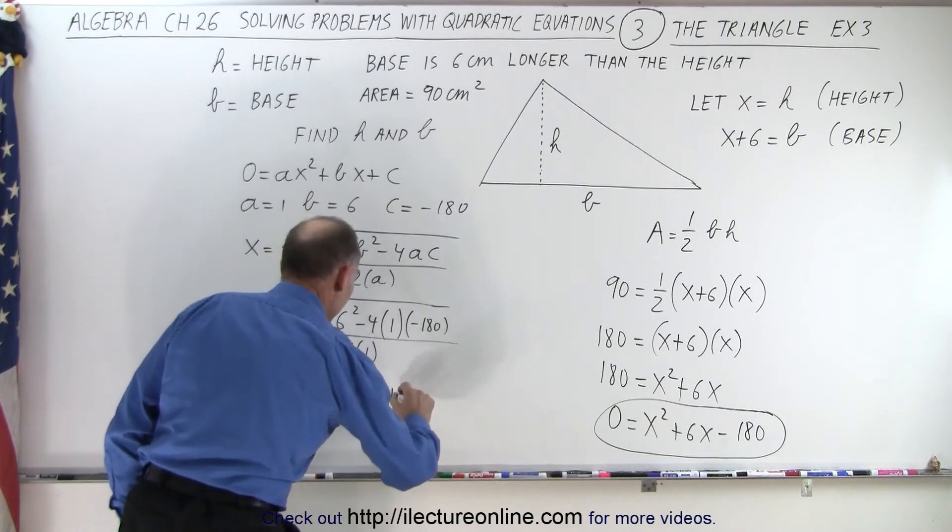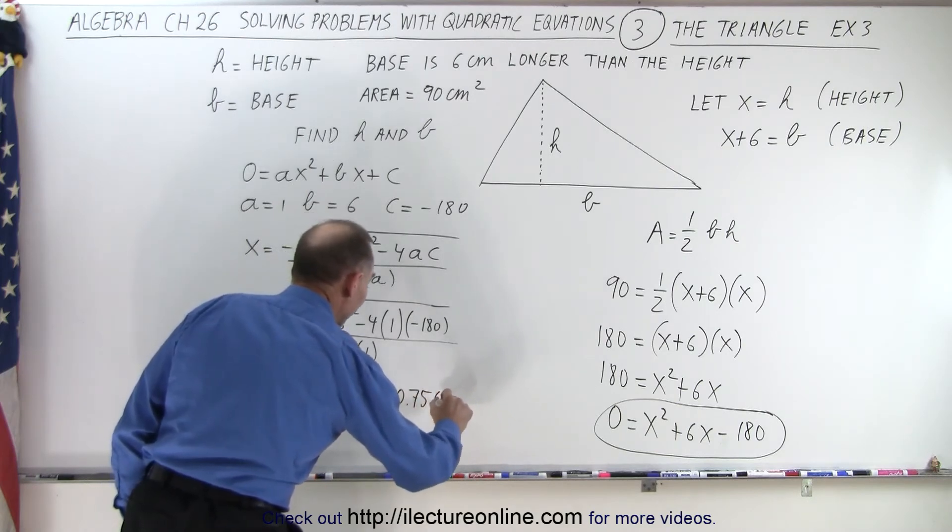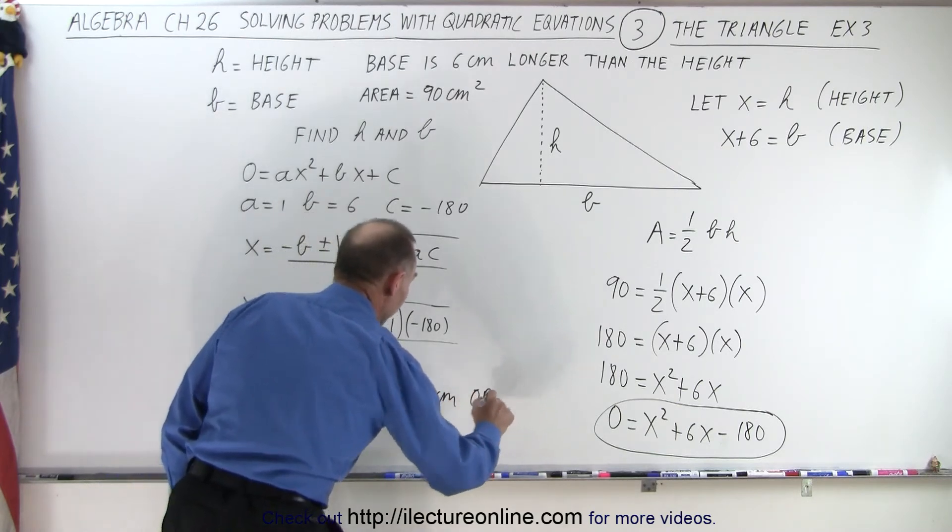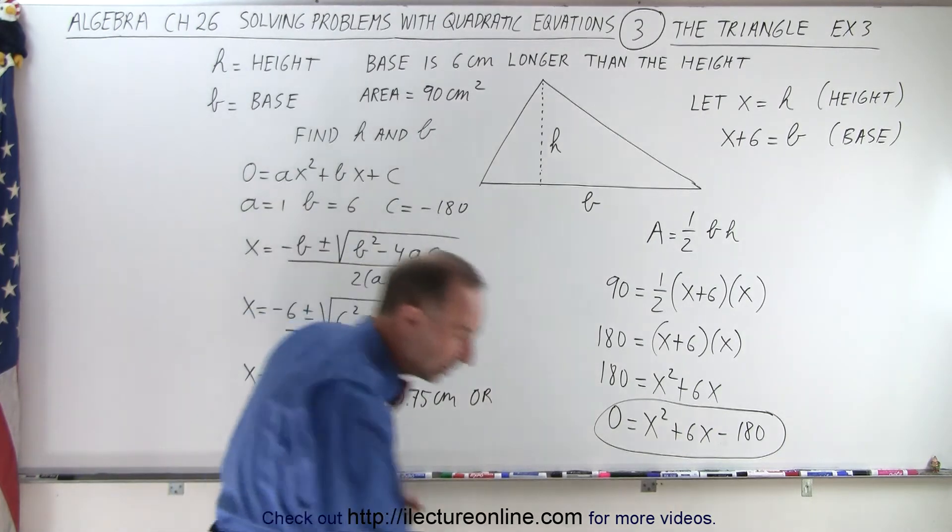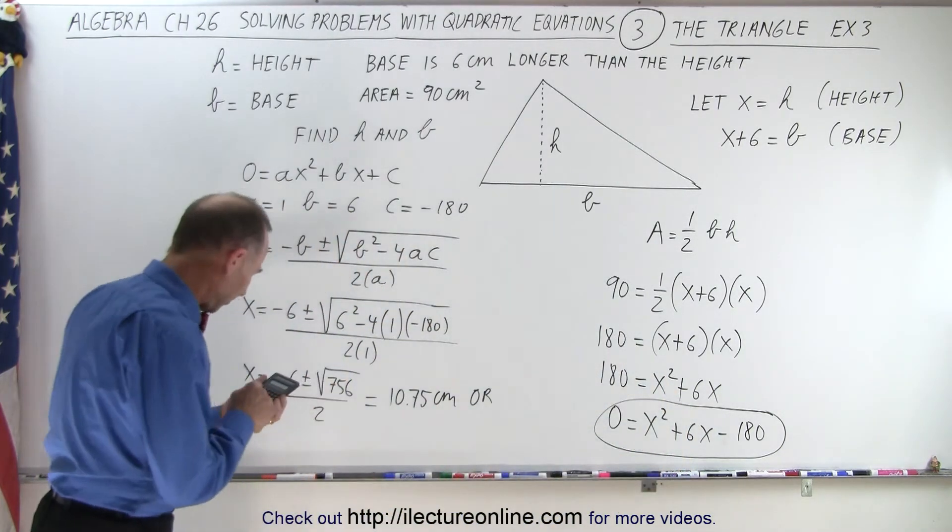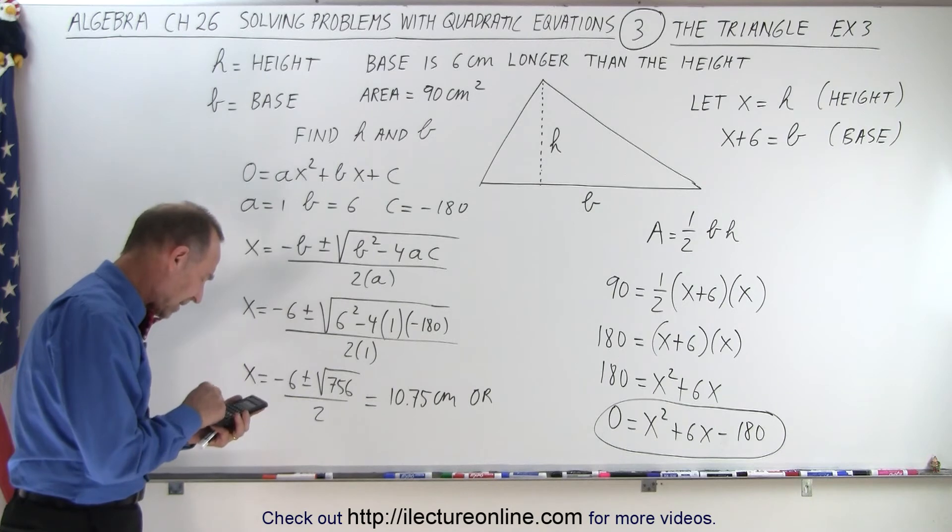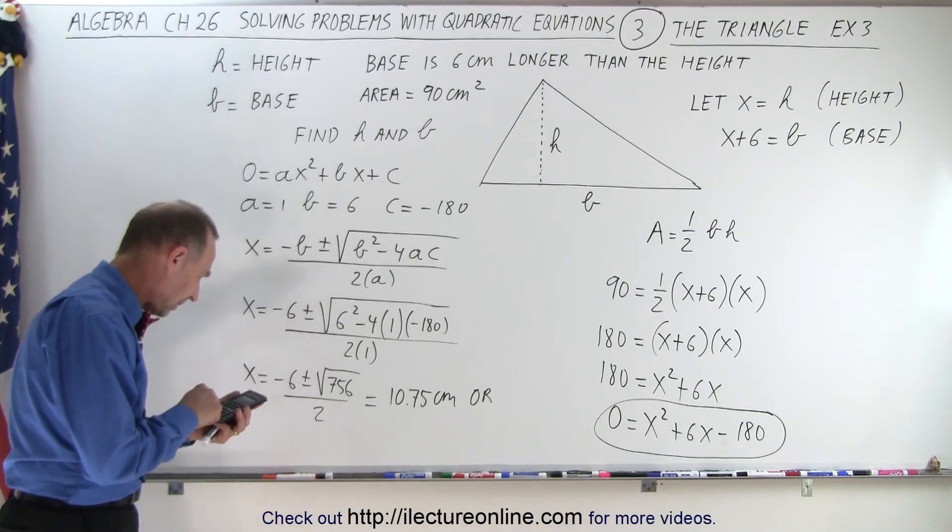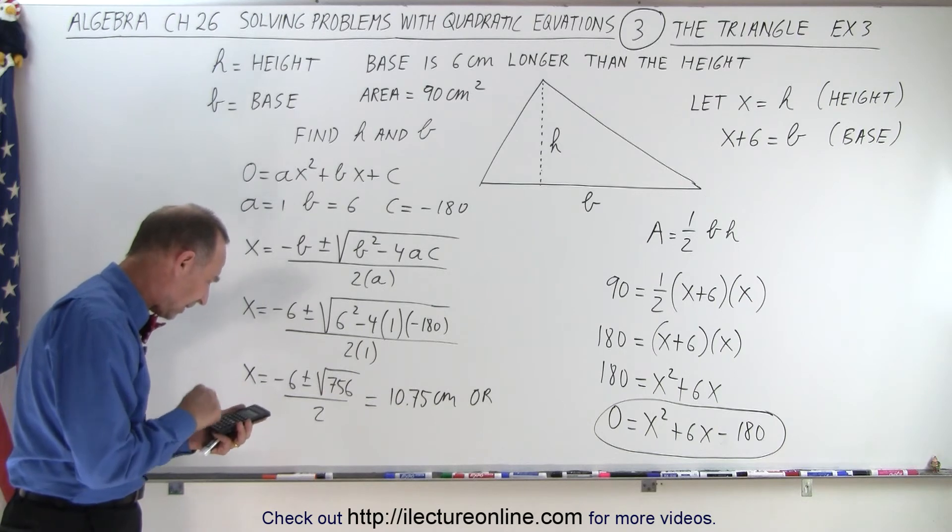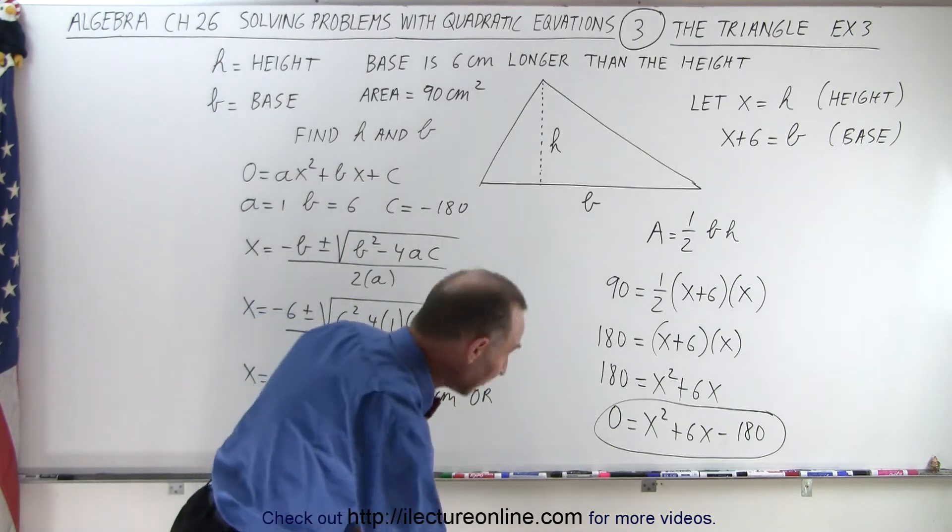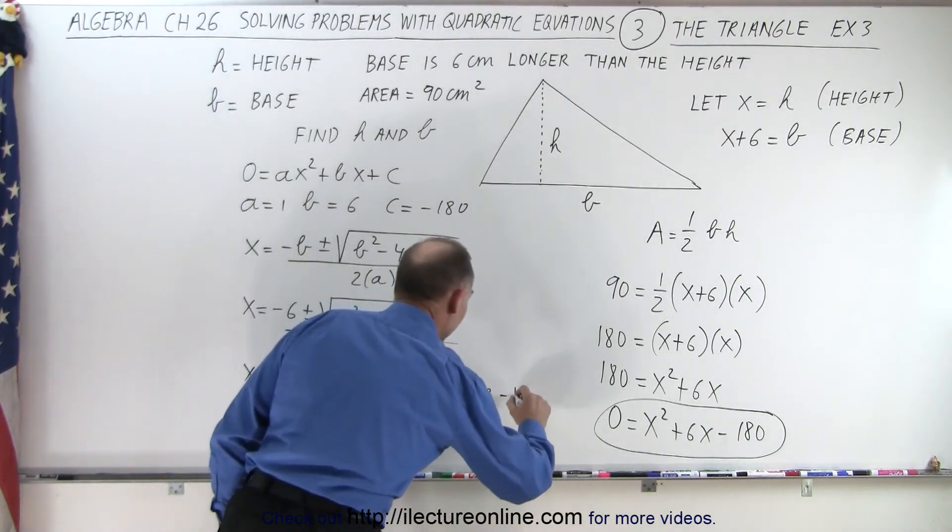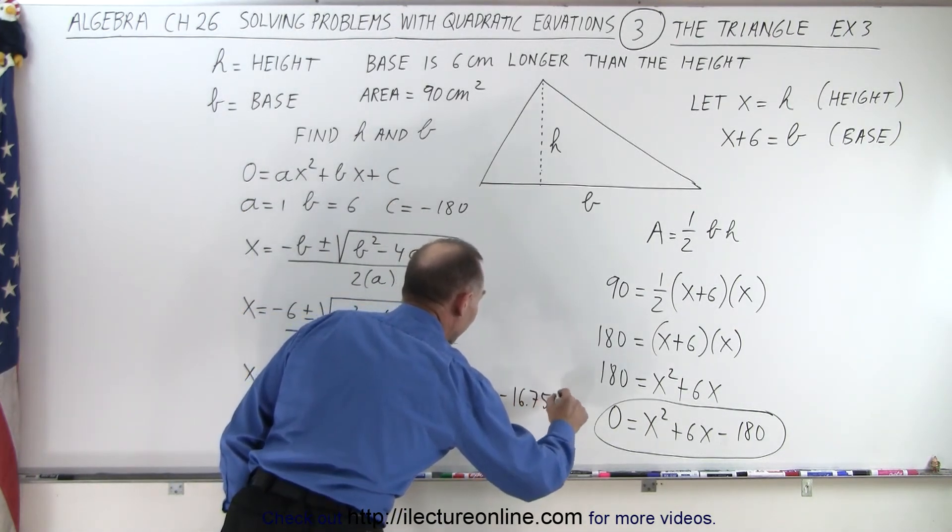So this is equal to 10.75 centimeters. Or if we take the negative value: 756, take the negative value, take the square root, negative value, then negative 6, divide by 2, and we get negative 16.75. So negative 16.75 centimeters.